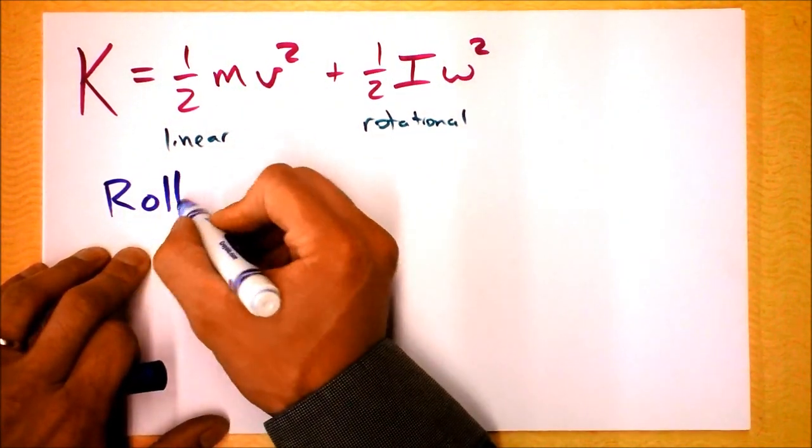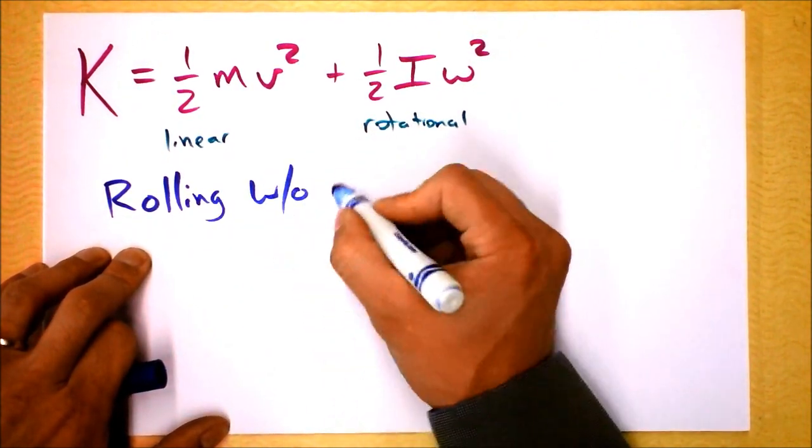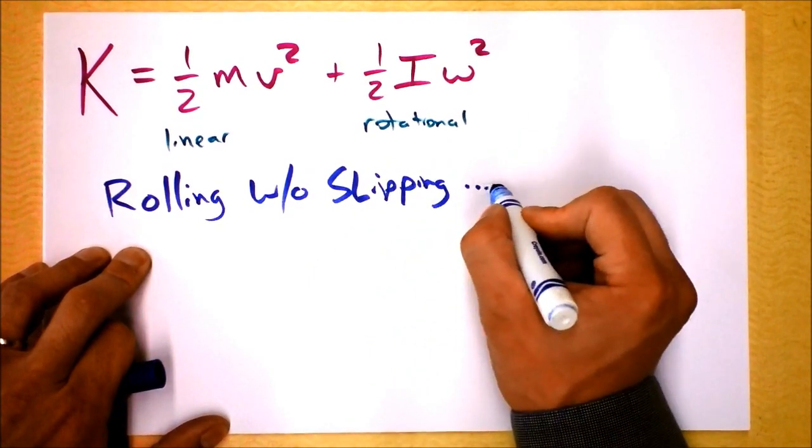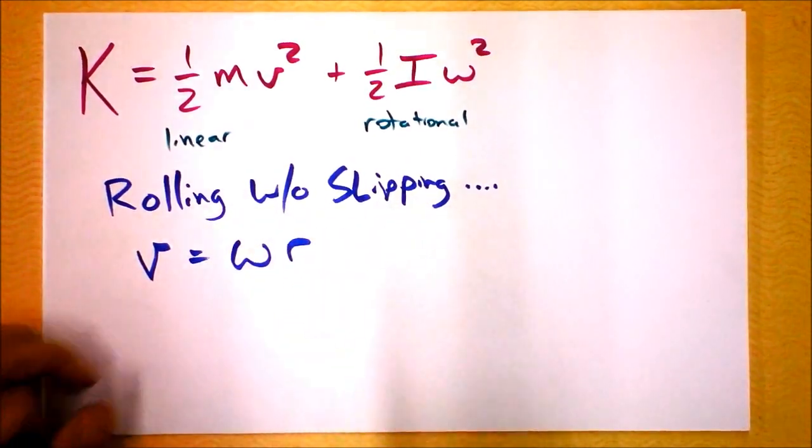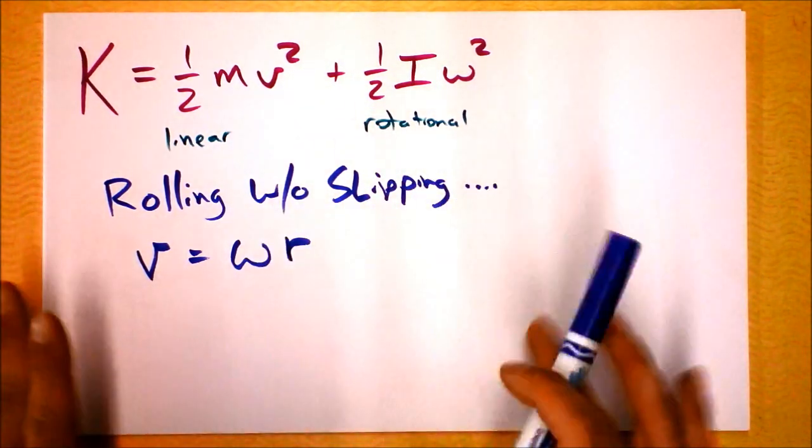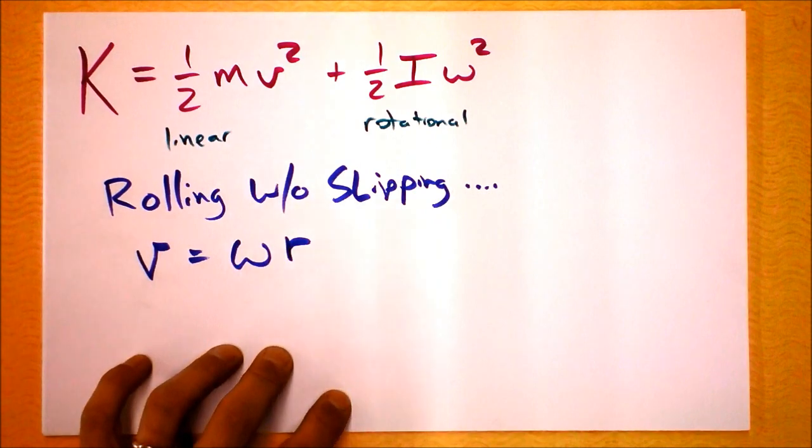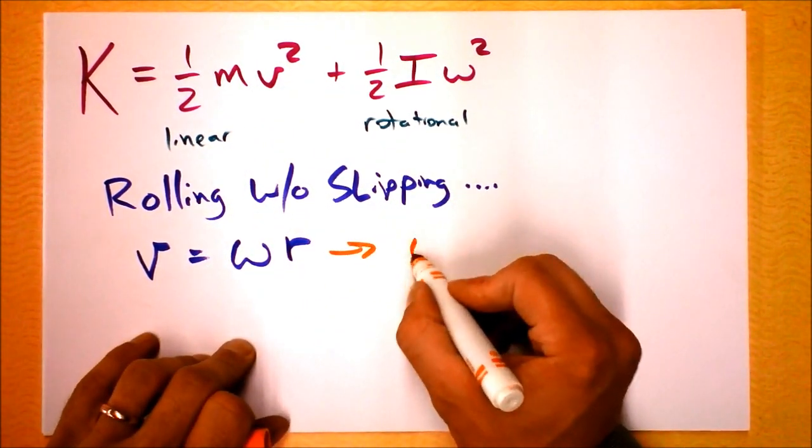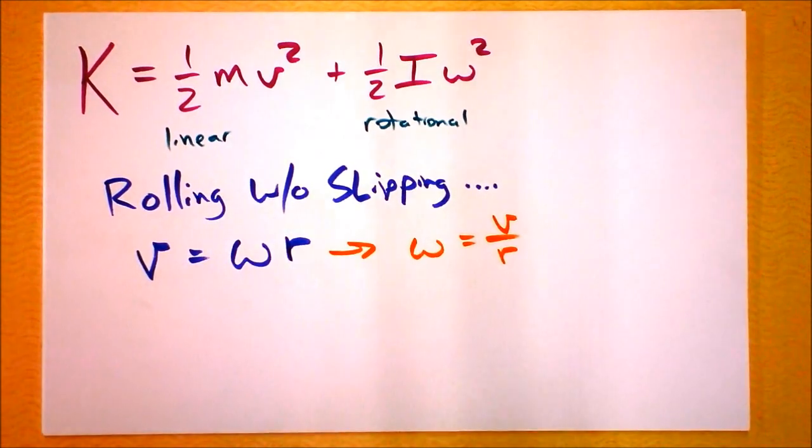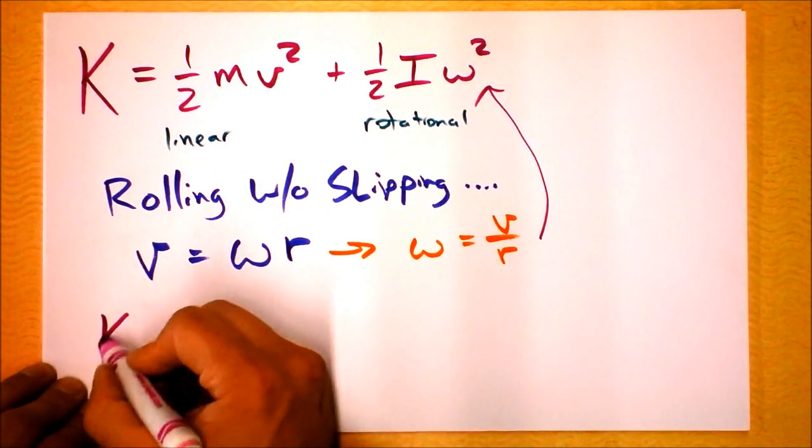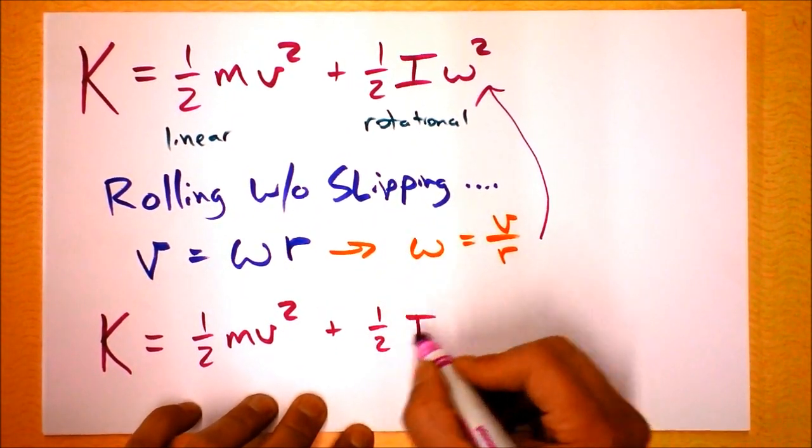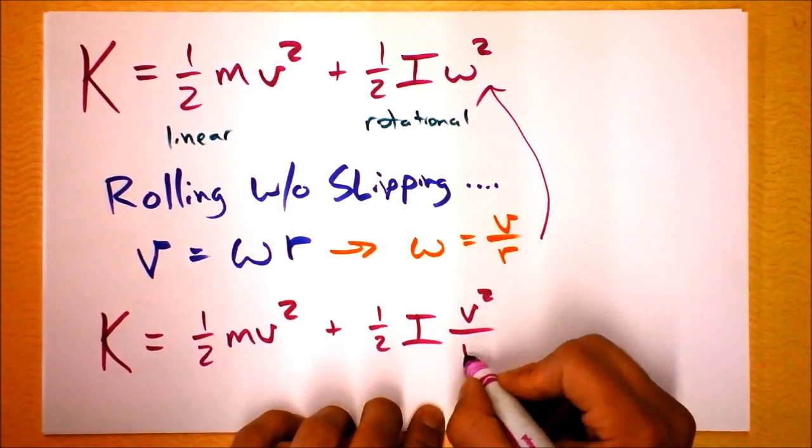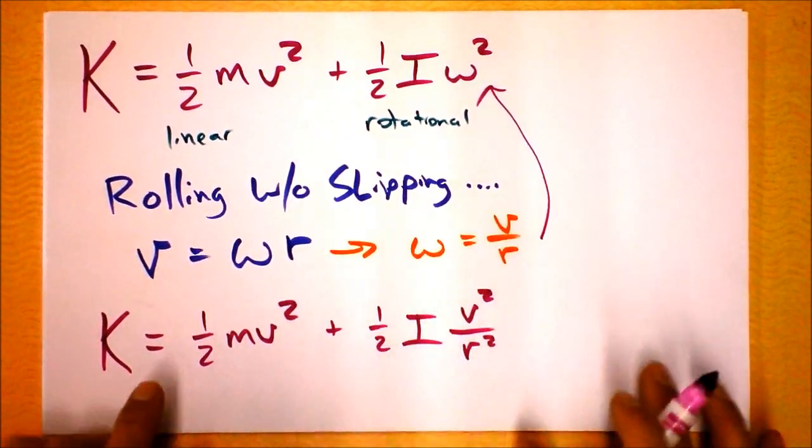If it's rolling without slipping, that special case that we really love, rolling without slipping means that V is omega times r if it's rolling without slipping. So we can look at this equation and we can change it just a little bit. I'm going to substitute in. I'm going to say that omega is V over r and I'm going to take that and plug it into this equation up here and rewrite it, and we'll find the kinetic energy of an object that is rolling without slipping to be one-half mv squared plus one-half I, and that's V squared over r squared.